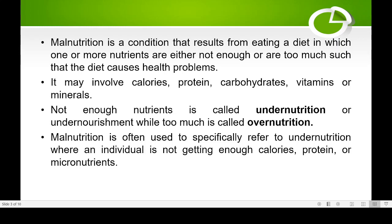Malnutrition may involve calories, proteins, carbohydrates, vitamins, as well as minerals. A deficiency of any of these nutrients can lead to malnutrition. Not having enough nutrients is known as under-nutrition, while too much of nutrients is known as over-nutrition. So malnutrition is often used specifically to refer to under-nutrition.